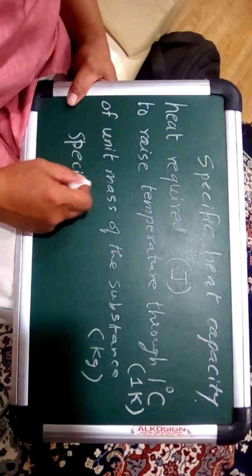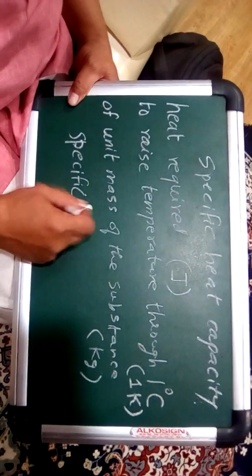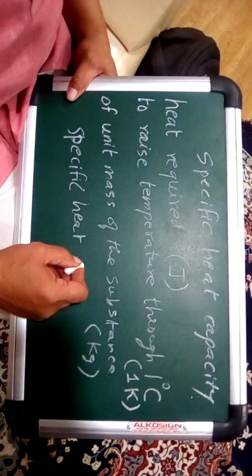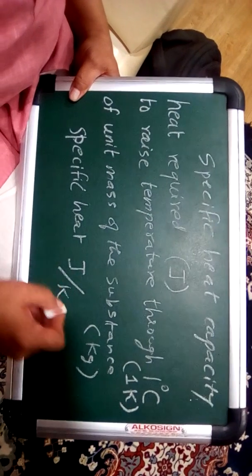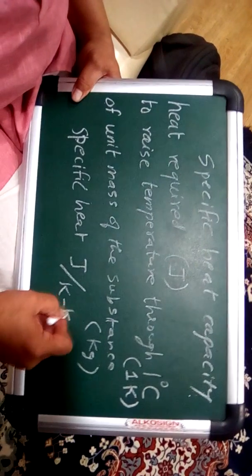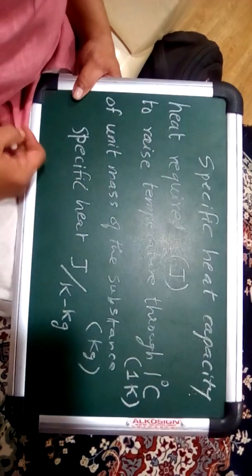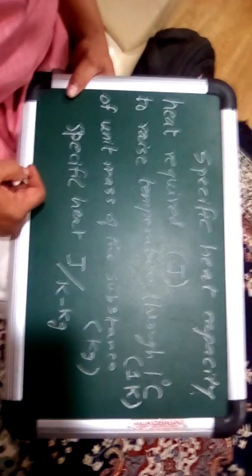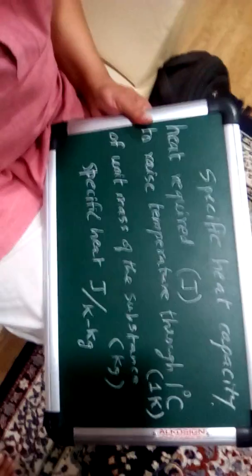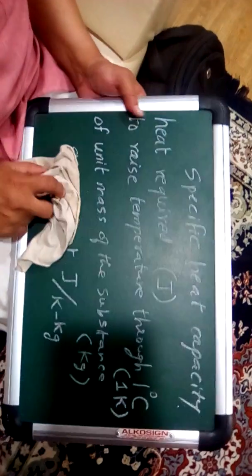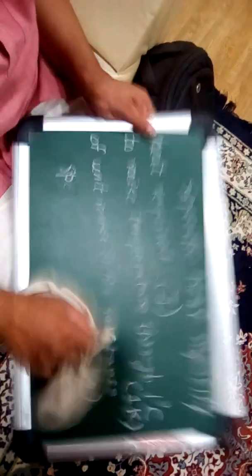Joules per Kelvin per kilogram. Now instead of Kelvin, many others write Joules per degree Celsius - that is one and the same thing. Let us understand the meaning of this.